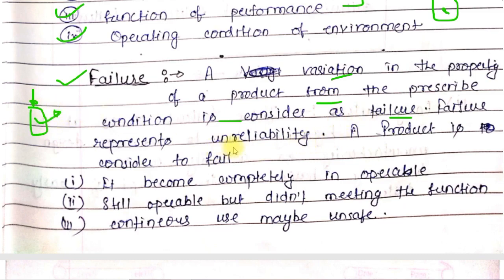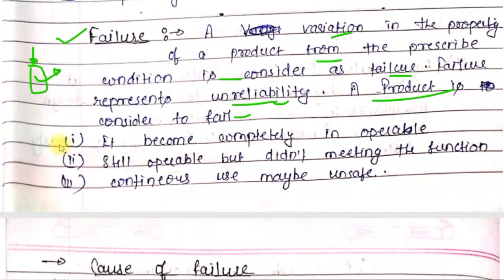Failure represents unreliability. The more the failure, the less the reliability. When will any product be considered failed? First, when it becomes completely inoperable - when the product completely stops operating. Second, when it's working but not completing its function or giving the desired output.